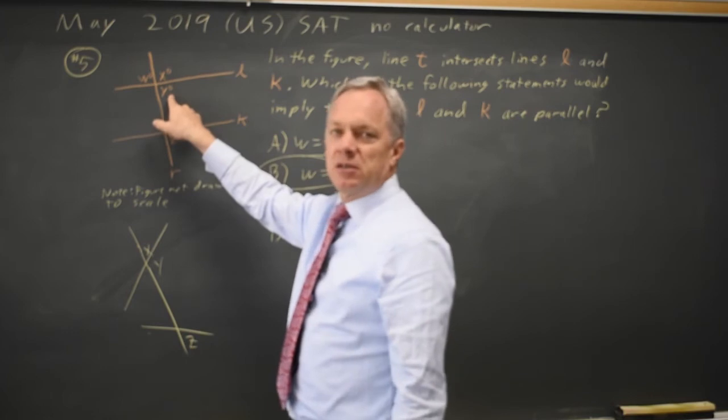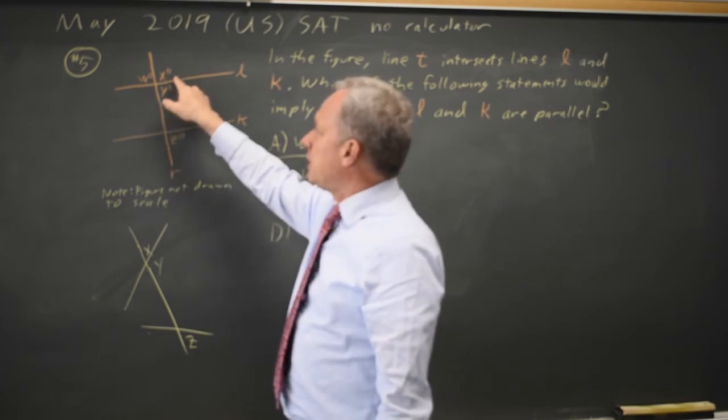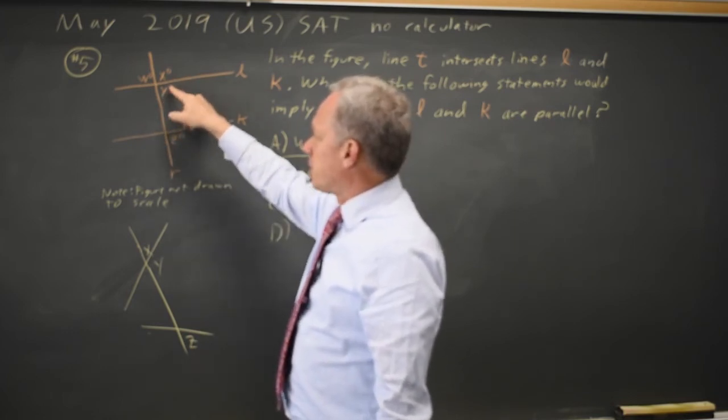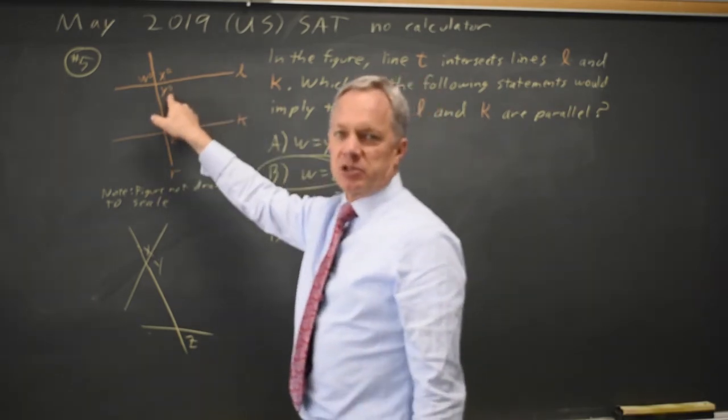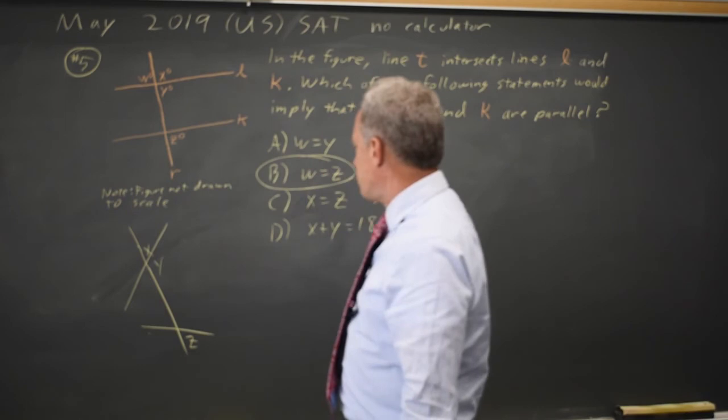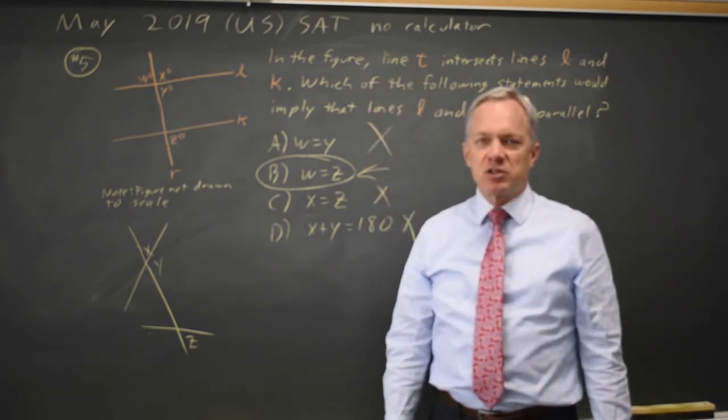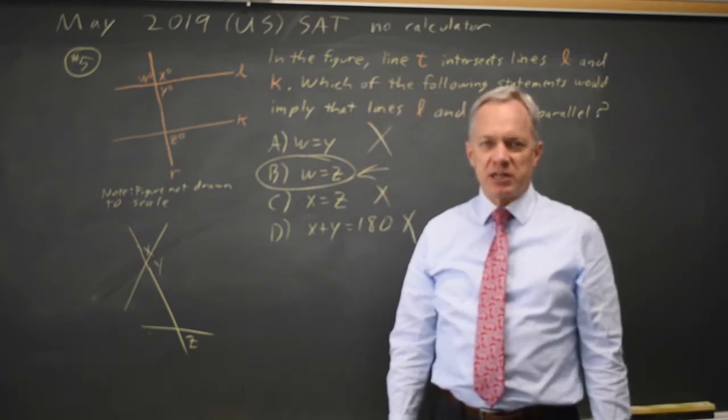Vertical angles, W and Y, are always equal. If lines L and K are parallel, then Y and Z will be equal, and two adjacent angles that add up to a straight angle add up to 180 degrees. And of course, they often test angles of triangle, add up to 180 degrees.